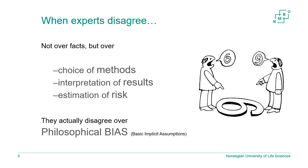In these cases, experts disagree, but they do not disagree over the facts. They disagree over the choice of methods, interpretation of results, and estimation of risk. So there are disagreements — they're disagreeing over what we call philosophical bias.